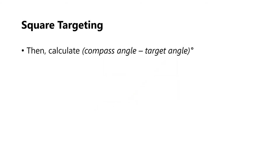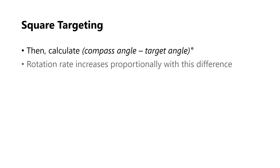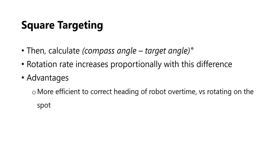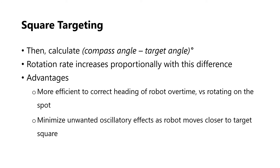We calculate the difference between the robot's compass reading and the target angle. The rotation rate increases proportionally with this difference. One advantage of this method is faster time taken to reach the target square. Also, as the robot moves closer to the target square, its rotation rate decreases, thereby minimizing unwanted oscillatory effects on its motion.